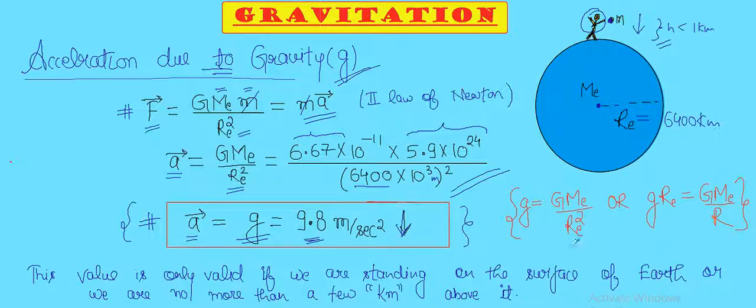Now here are two other formulas that you might be using in this chapter. The value of g in terms of constant is small g equals to capital G Me by re square. This is one. And the second is, we can derive the second formula from the first one. If I remove this re from here and take it to the left hand side, I get small g into re² equals to GMe/re. These two substitutions will be used in other questions.